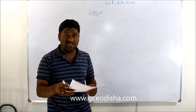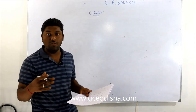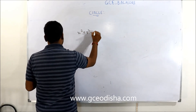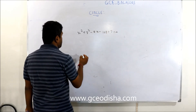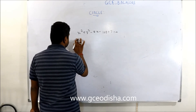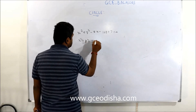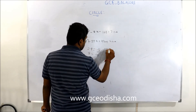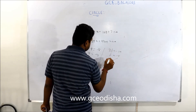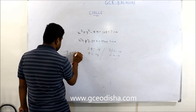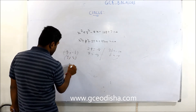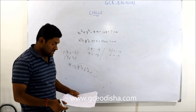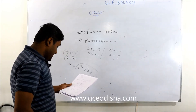Given the circle equation x² + y² - 8x + 10y + 7 = 0, comparing with x² + y² + 2gx + 2fy + c = 0: 2g = -8 so g = -4; 2f = 10 so f = 5. The center is (-g, -f) = (4, -5) and the radius is √(g² + f² - c).